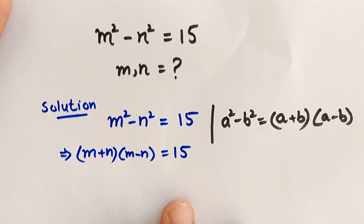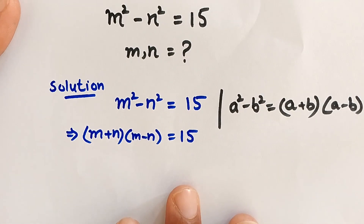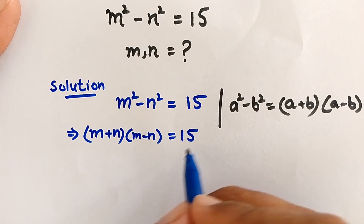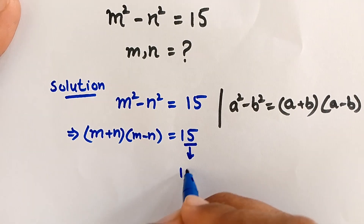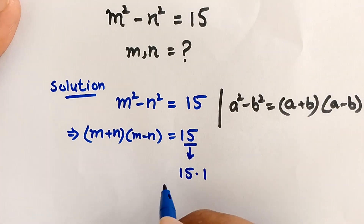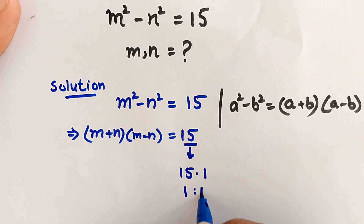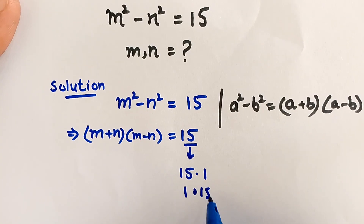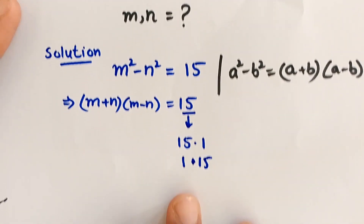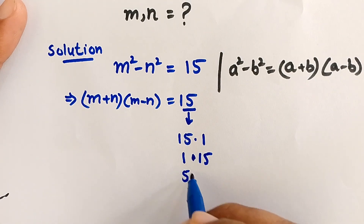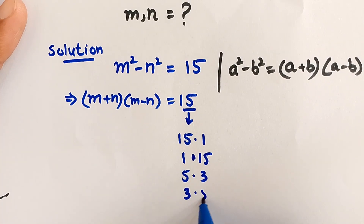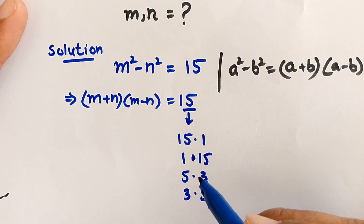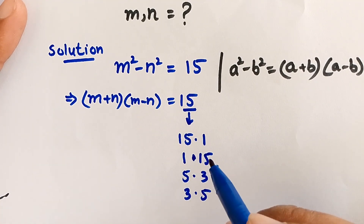Now we have to factorize 15. The factor pairs are: 15 times 1 equals 15, 5 times 3 equals 15, and 3 times 5 equals 15. These are the different factors of 15.